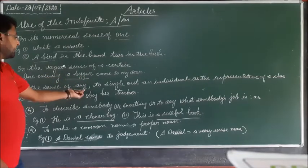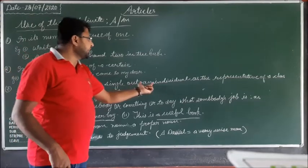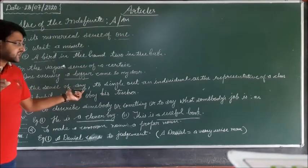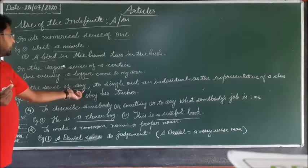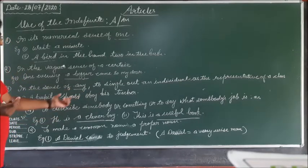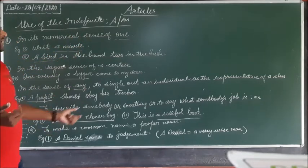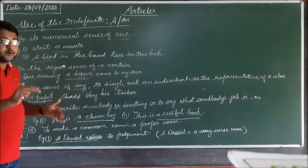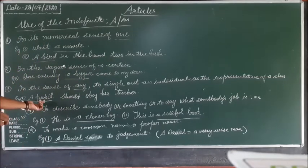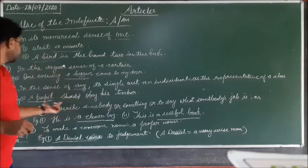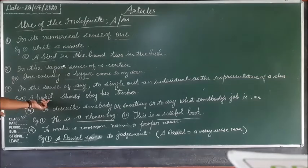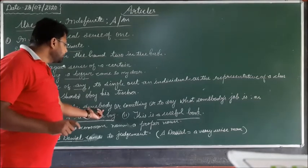The third use is in the sense of 'any' — to single out an individual as the representative of a class. The person is indefinite but is the representative of a whole group. For example: 'A pupil should obey his teacher.' Here 'a pupil' means any pupil — one person who is the representative of a class, but he is indefinite.